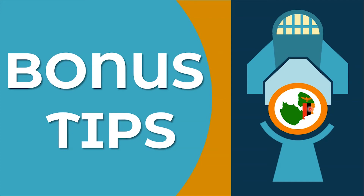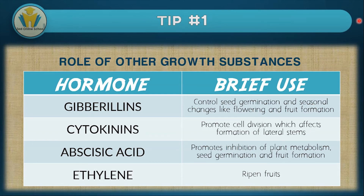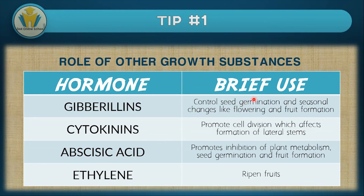You have successfully reached the bonus tip section. In today's video we have two tips. The first covers other growth substances. In the table we've summarized four hormones: the first is gibberellins. Gibberellins are used to control seed germination, seasonal changes such as flowering, and fruit formation. When gibberellins is secreted, a plant will likely germinate, flower, and form fruits.